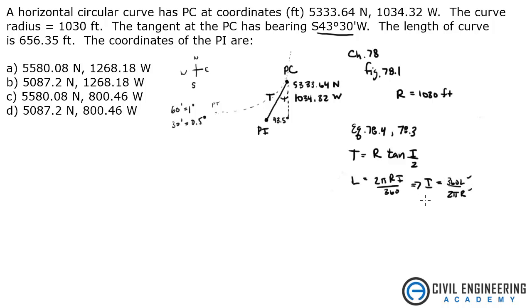So let's get that solved for i. i is equal to 360 L over 2 pi R. Well, we know L and we know R, so we can solve for i. Let's just plug it all in. 360 times L. The L length of curve, I didn't write that in, but L is given at 656.35 feet.